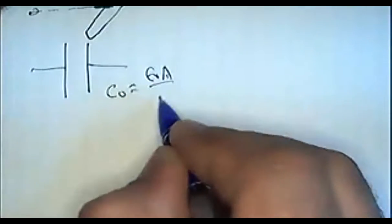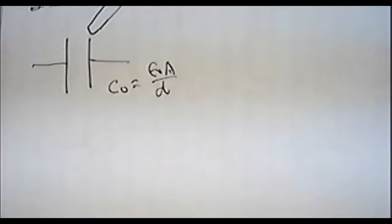So this is the capacitor. Its capacity c0 equals epsilon0 times a divided by d.